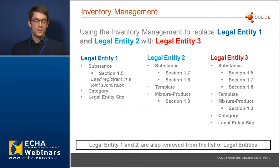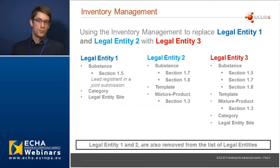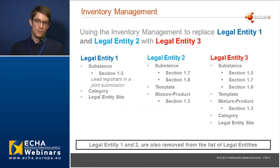As a small illustrative example: if I have two legal entities in IUCLID — legal entity one and legal entity two — linked in various places such as substance section 1.5 or 1.8, and I want to replace these with a single inventory entity, legal entity three, then once the replace is done, legal entity three will appear in all those different areas. Legal entity one and legal entity two are then removed from the list of legal entities.